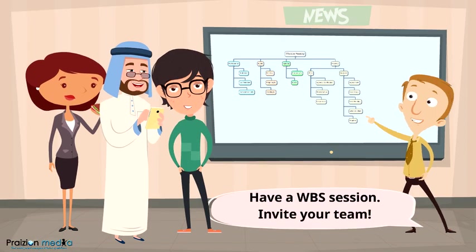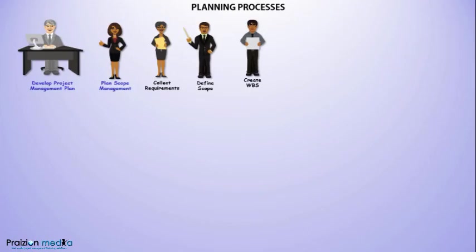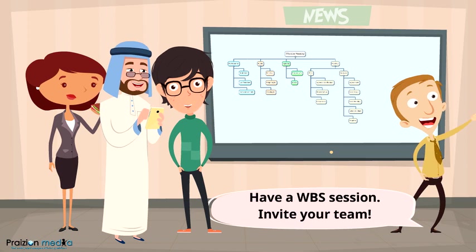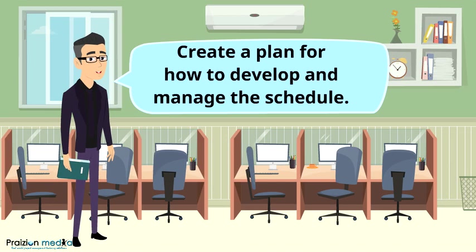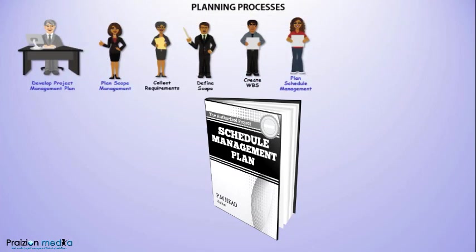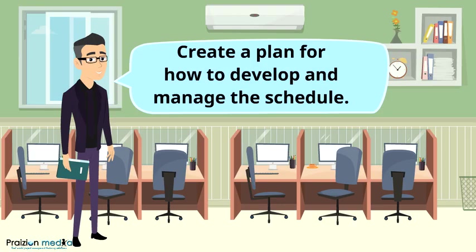The next process is Create WBS. WBS stands for Work Breakdown Structure — a hierarchical decomposition of the project work, structured like a family tree. The next process is Plan Schedule Management, where the team creates a plan for how to develop and manage the schedule. This covers scheduling tools, how many people will be involved, when it will take place, and how often tasks will be reviewed.